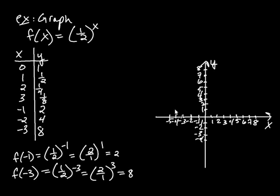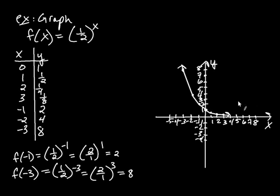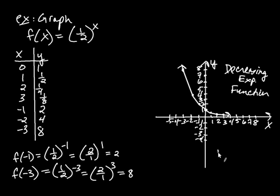Let's go ahead and plot these ordered pairs. (0,1), (1, 1/2), (2, 1/4), (3, 1/8) — getting smaller as x increases. And for negative x: (−1, 2) way up here; (−2, 4) way up here; (−3, 8) way up there. You can see here that we have a decreasing exponential function — this would be called a decreasing exponential function. The domain is again negative infinity to infinity, and the range is still 0 to infinity since the curve never quite reaches 0.